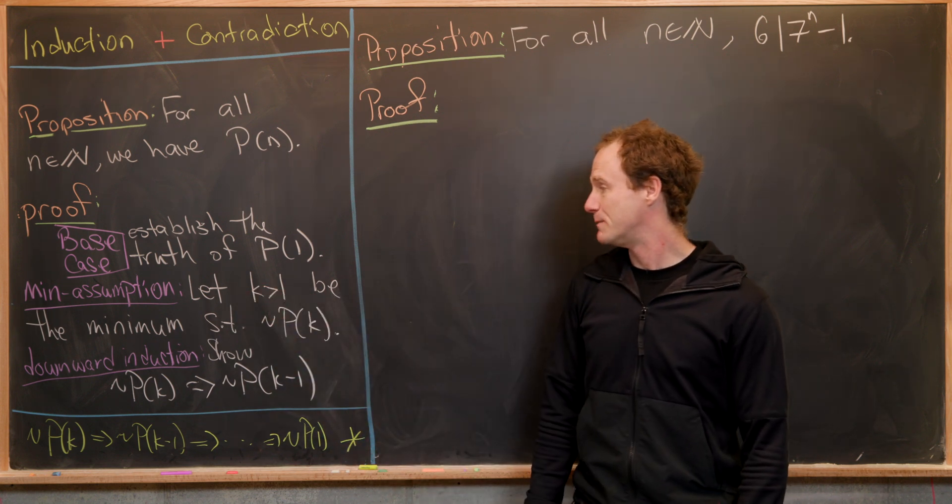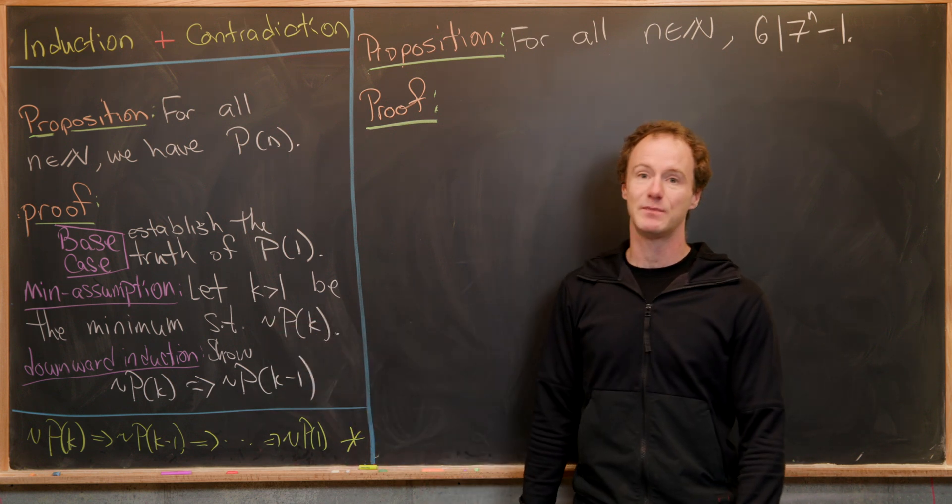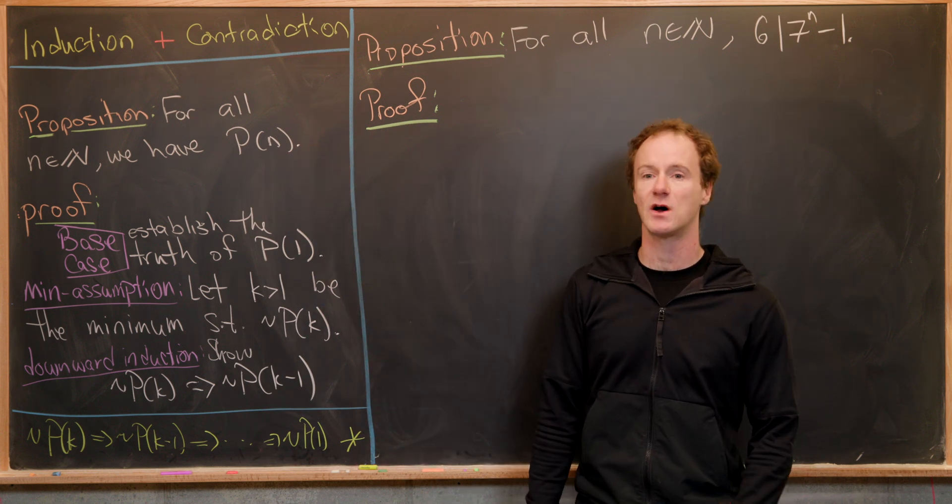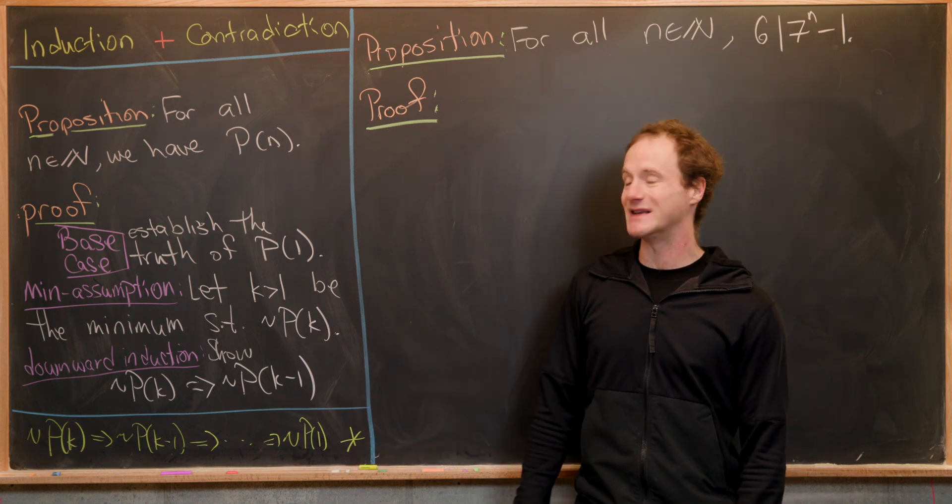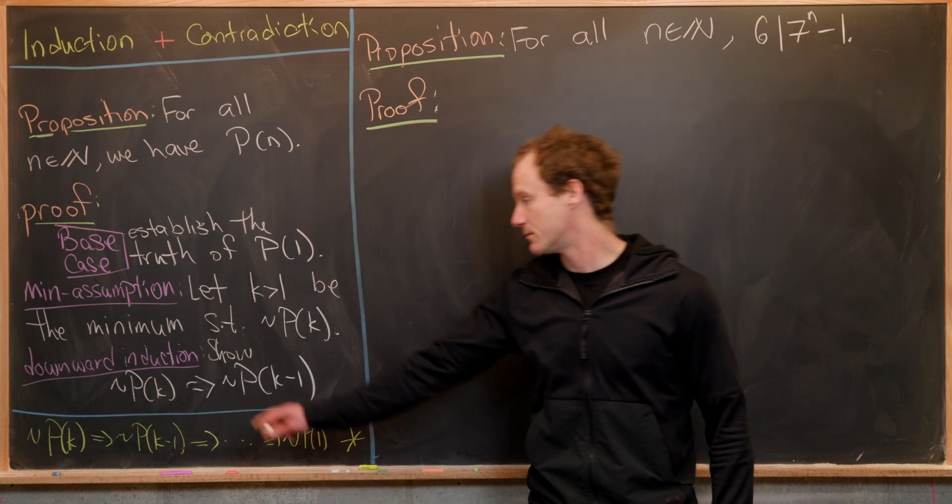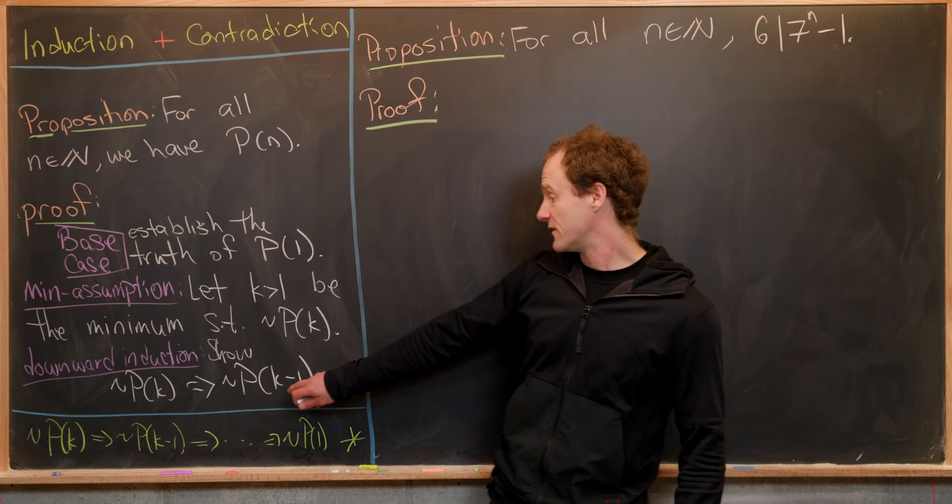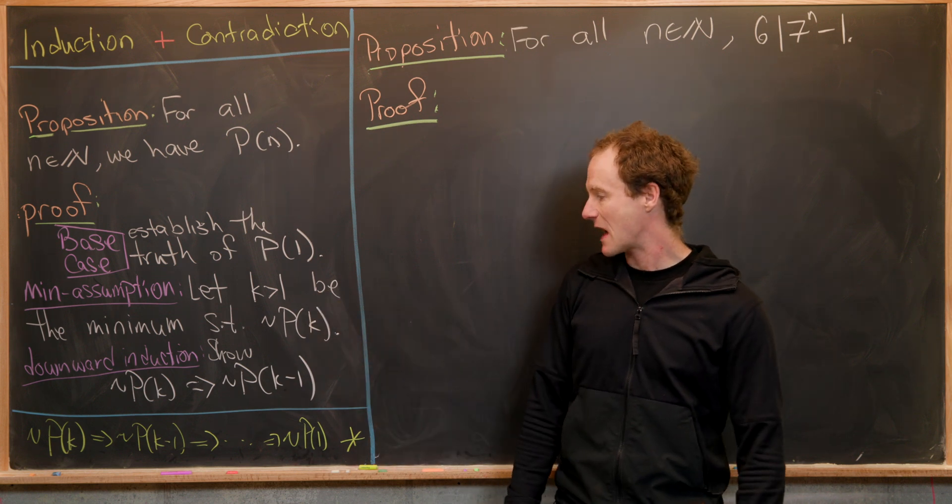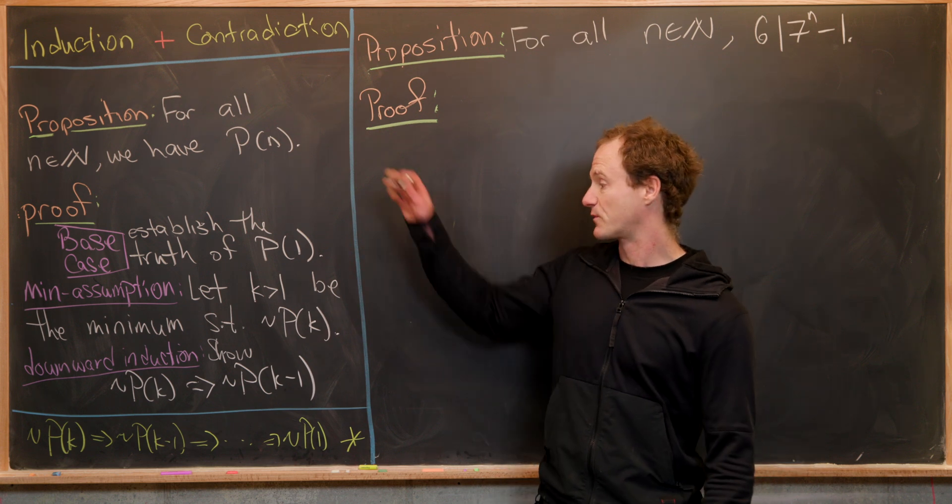Let k bigger than one be the minimum such that not p of k. If there exists a place where this is false, then there exists a minimum place where this is false. Then you're going to do a downward induction: prove that not p of k implies not p of k minus one. But if not p of k minus one, then that contradicts the minimality of k, and we're done.